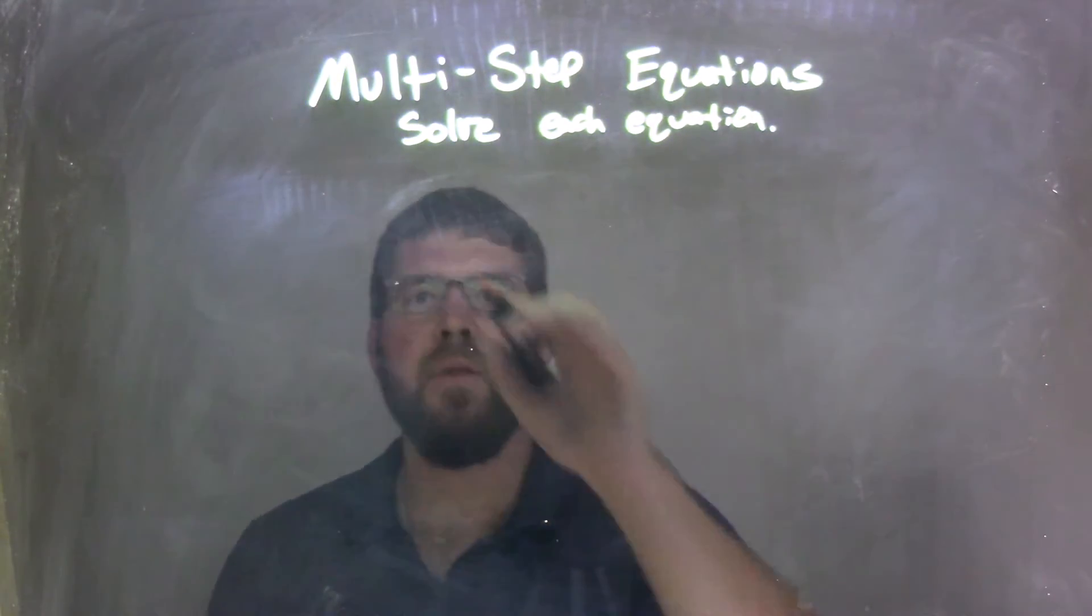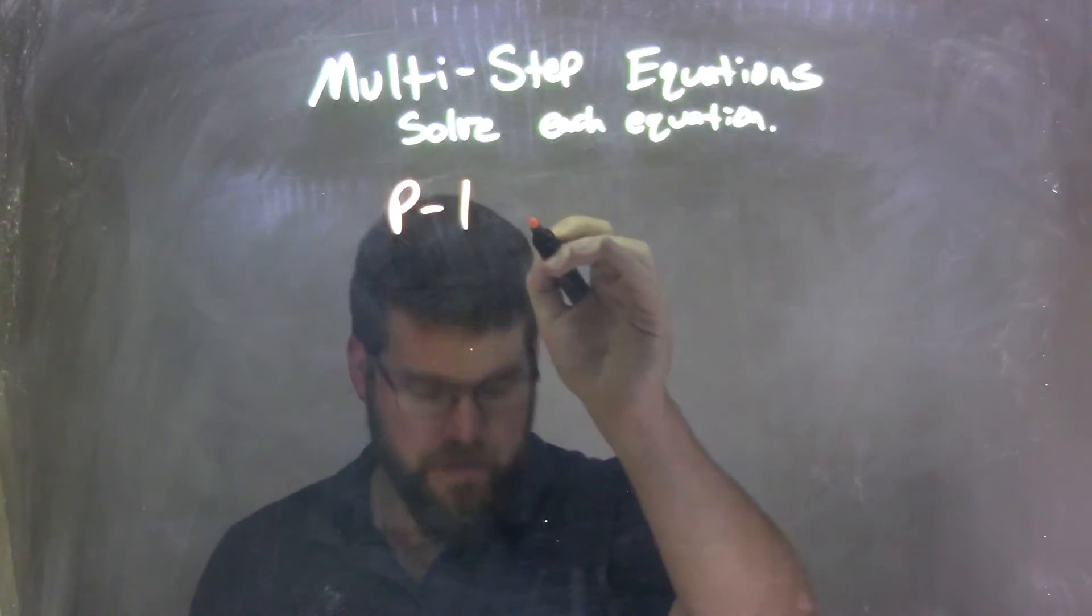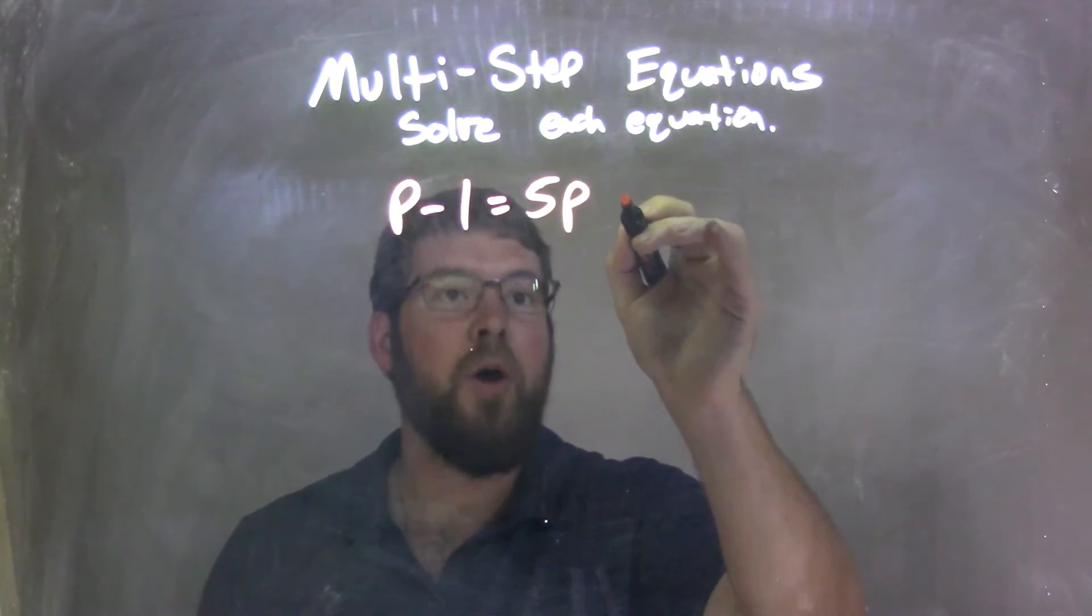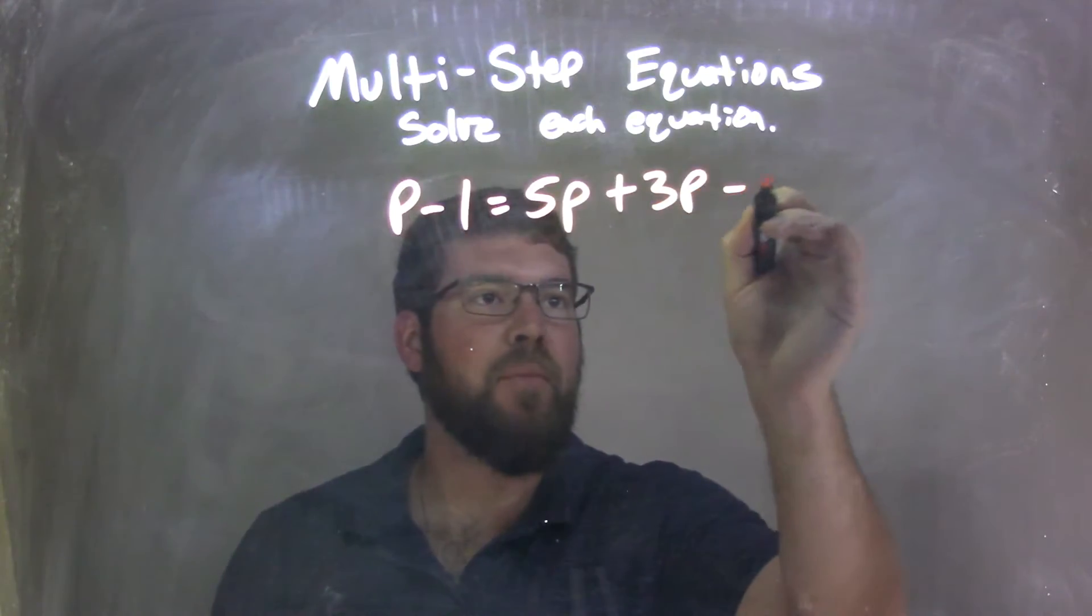So if I was given this equation here of p minus 1 equals 5p plus 3p minus 8.